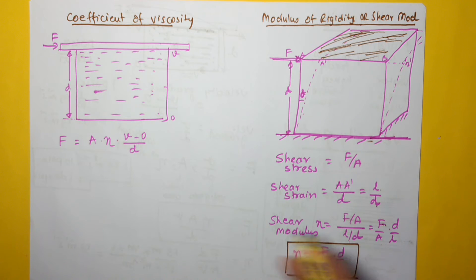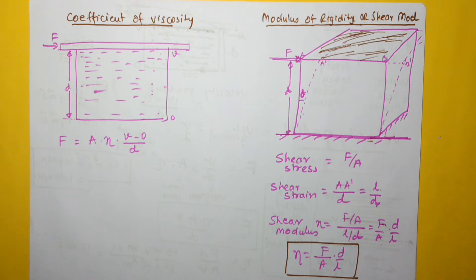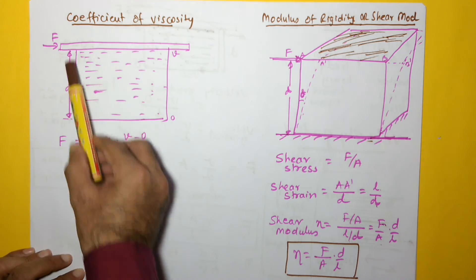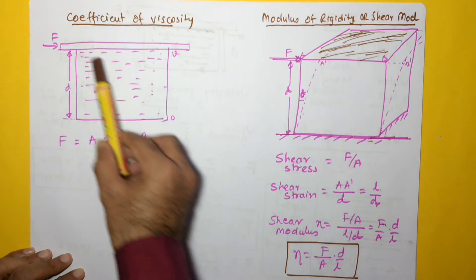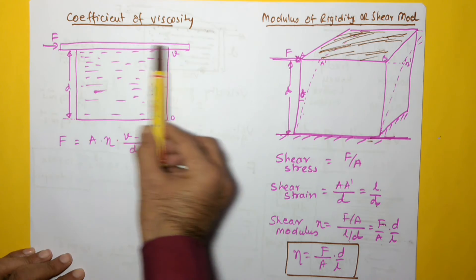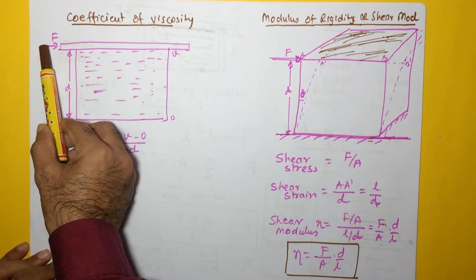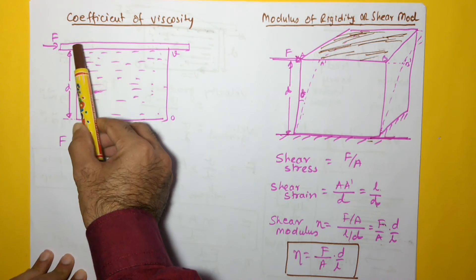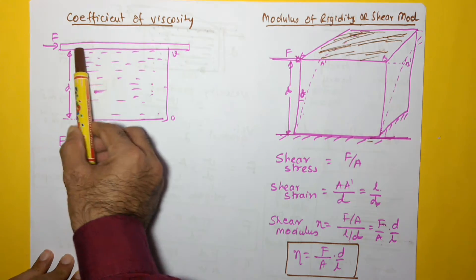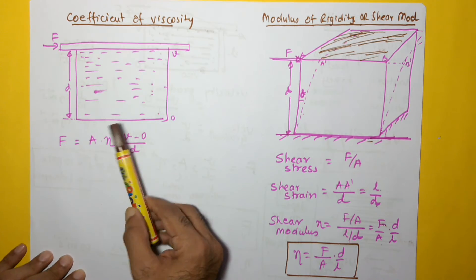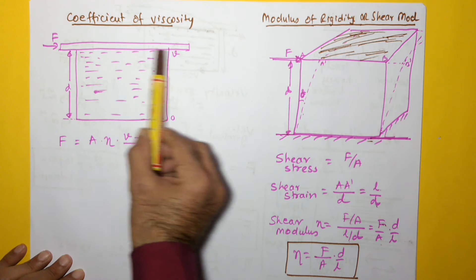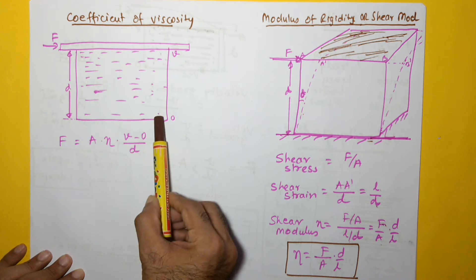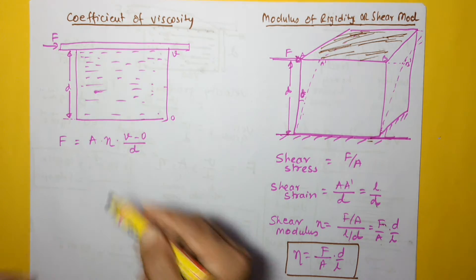Now interestingly, if we look at the coefficient of viscosity which we discussed in the previous video, we'll find it is very similar. We talked about a container filled with liquid, and a plate on top. We apply a force F onto this plate, which pushes the liquid in that direction. The top layer moves with velocity v and the bottommost layer has velocity zero.